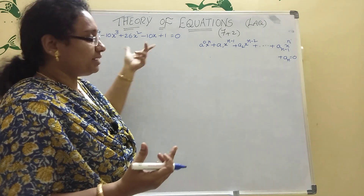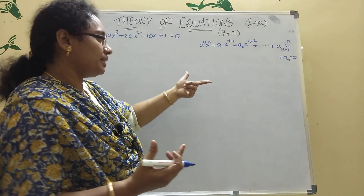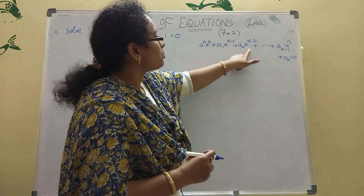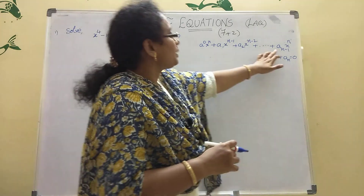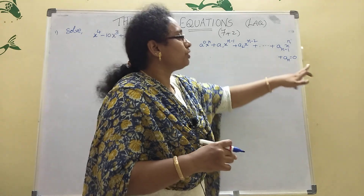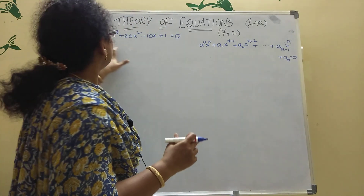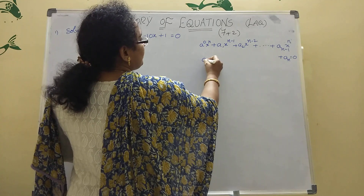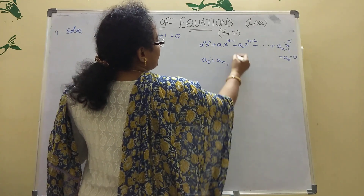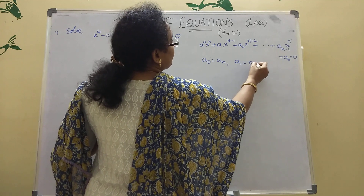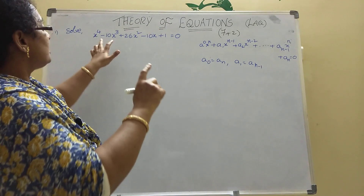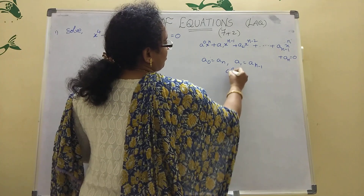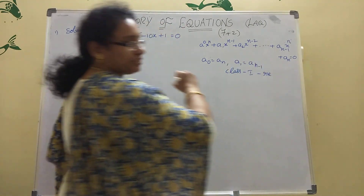Here, observe how the polynomial expression will be — class 1 reciprocal or class 2 reciprocal. See, A0 x power n plus A1 x power n-1 plus A2 x power n-2 and so on plus An-1 x plus An equal to 0. Now compare this general expression with our equation. Here A0 equal to An — first and last are equal. Next, A1 equal to An-1. Here minus 10 and minus 10 only — so this is the class 1 reciprocal equation.